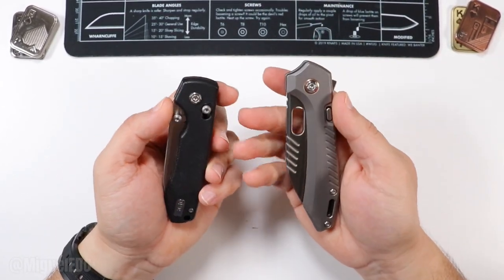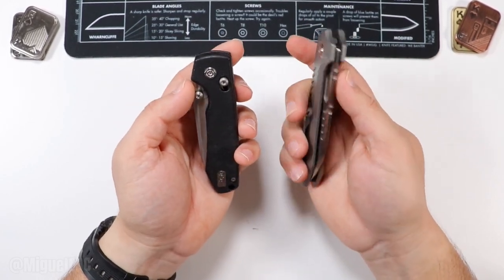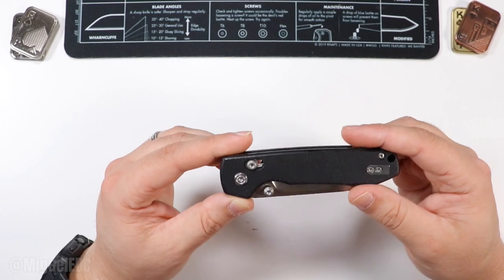Of course, I'm coming from the RS Chaos Vosteed. This one's on titanium, bigger knife, a little bit of more weight to it, obviously.